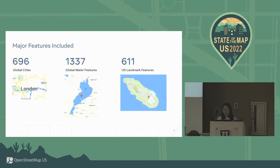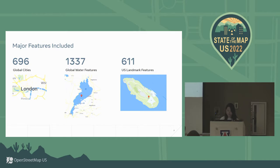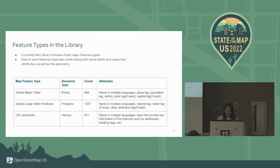For landmark features, it's currently US-only. It could be tourism spots or significant local landmarks, like Alcatraz Island or Painted Ladies in San Francisco. For each feature type, the data comes with name labels, important attributes, as well as geometries. For example, for a major city, it comes with geometry type as a point, names in multiple languages, place tag, population tag, admin level tag, and capital tag, which are the important attributes for cities.